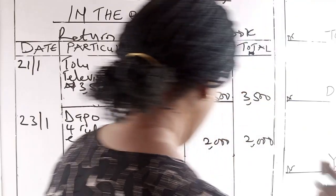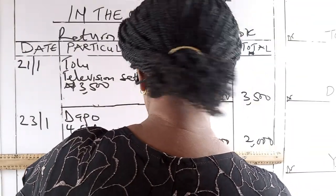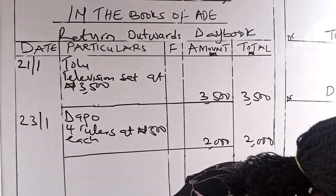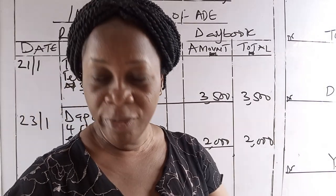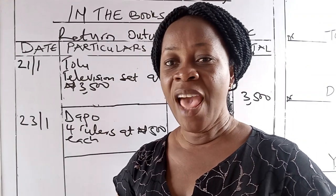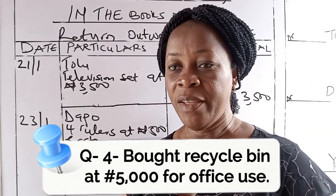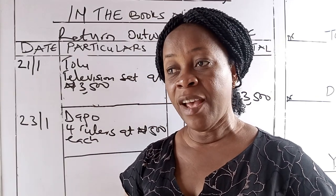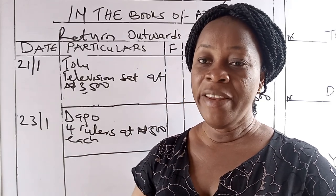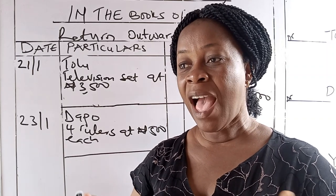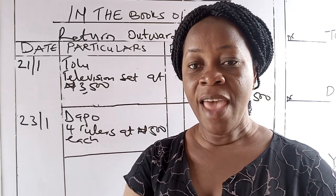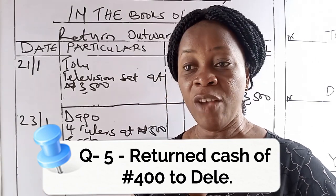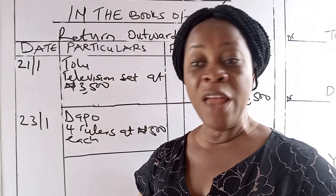Please always maintain proper presentation. We draw a line underneath to separate the first transaction from Tolu's and Dapo's transactions. The next transaction on the 24th of January: bought a recycle bin at 3,000 Naira cash for the office — that is a cash transaction. Cash transactions are not recorded in the day books. Also on January 24th: return cash of 400 Naira to Dapo — that is equally a cash transaction, because it was cash returned and not goods.